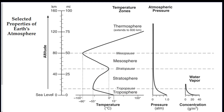The black line gives you all your information. From the ground at 15°C, as you go up through the troposphere, temperature drops to negative 55°C. In the stratosphere, the temperature goes back up to zero degrees — from negative 55 to zero — because the stratosphere contains the ozone layer, which absorbs harmful UV radiation.